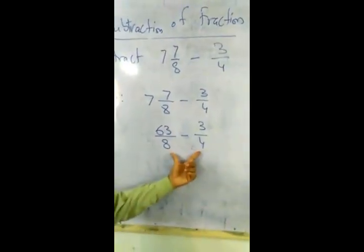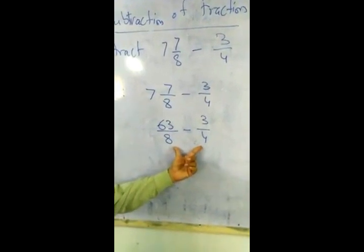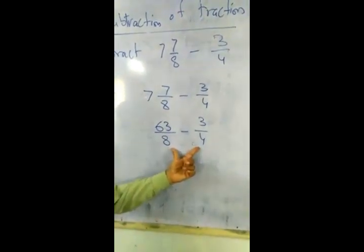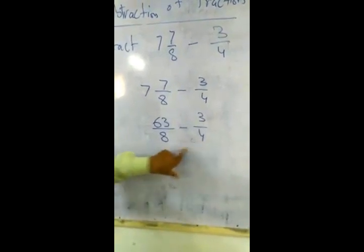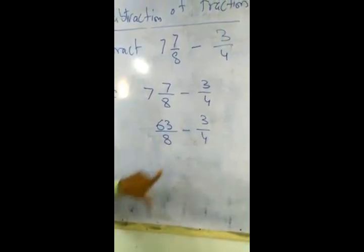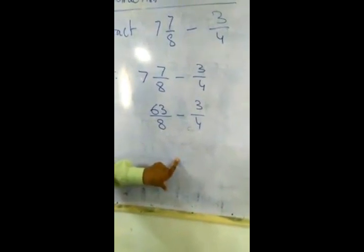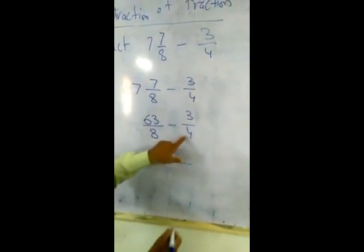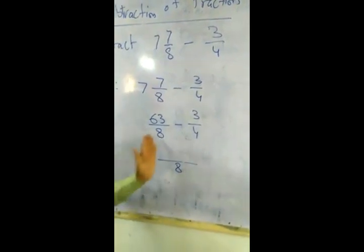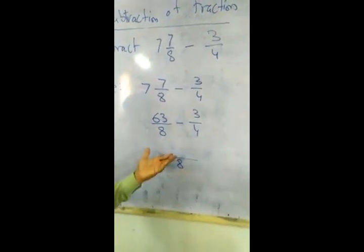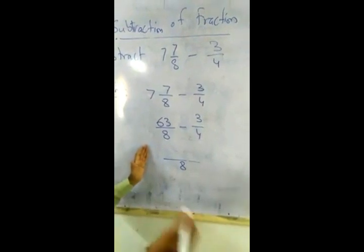Now we have to take LCM so we can add it. Just simple numbers. If we have LCM, it can divide. If we have different numbers, we have to make common denominator.